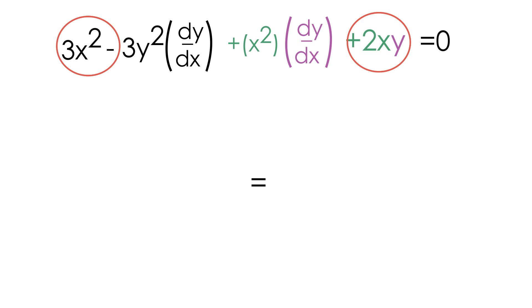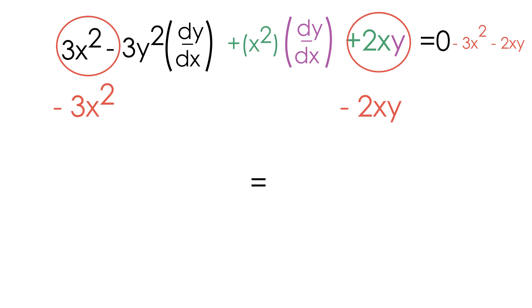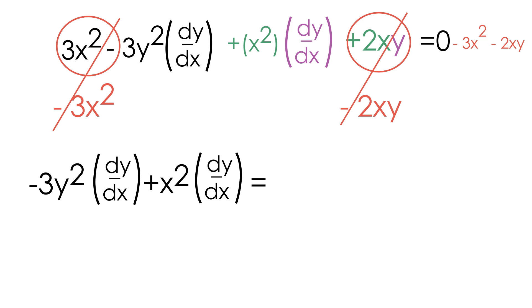The 3x squared and the positive 2xy are both non-dy/dx terms, so let's move them to the other side by subtracting 3x squared and subtracting 2xy from both sides. On the left hand side, 3x squared and negative 3x squared cancel out, and positive 2xy and negative 2xy cancel out, leaving only the dy/dx terms. On the right hand side we now have negative 3x squared minus 2xy.